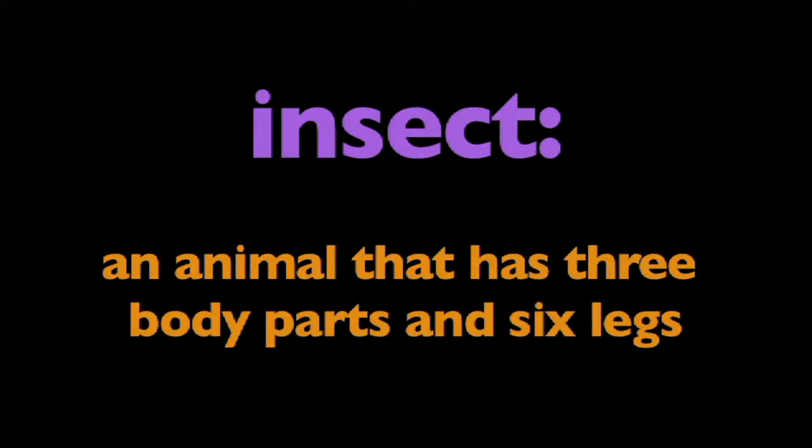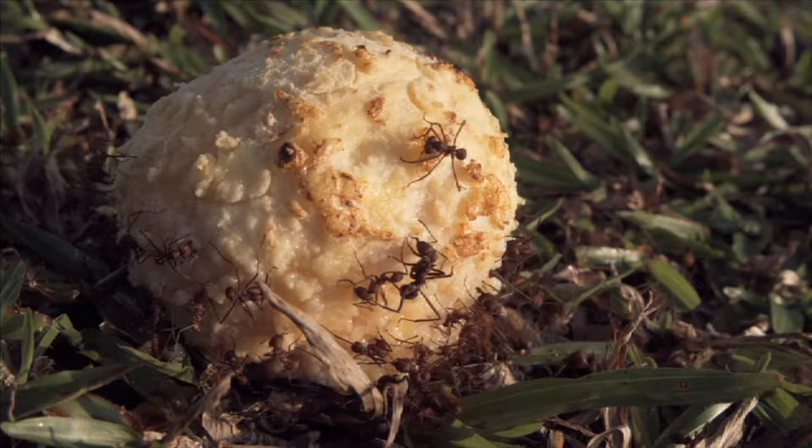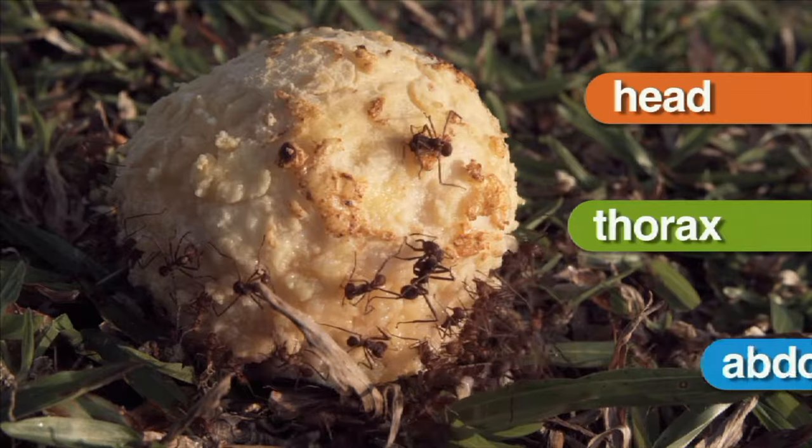An ant is an insect. The three parts of its body are the head, thorax, and abdomen. It has six legs.